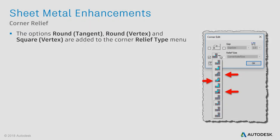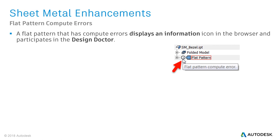Something good to know: three additional corner relief types — Round Tangent, Round Vertex, and Square Vertex — have been added in Inventor 2017. Extremely useful is the small information icon that gets displayed when a Flat Pattern has compute errors. Besides the information, you can use the Design Doctor to troubleshoot compute errors.